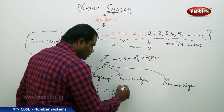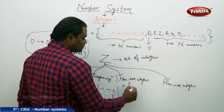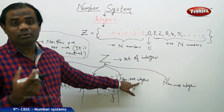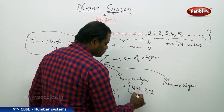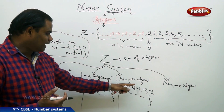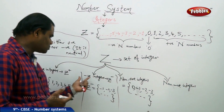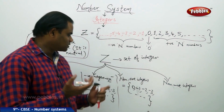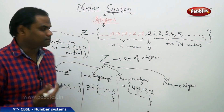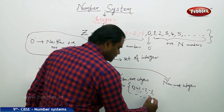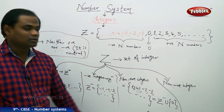Since 0 is neither positive nor negative and is neutral, when I say non-positive, I include all the integers that are not positive — meaning the negative integers — but also including 0, because 0 is a non-positive integer. So non-positive integers come out to be 0, minus 1, minus 2, minus 3, and so on and so forth till infinity. Therefore, non-positive integers is nothing but the set of negative integers including 0, written as Z minus union {0}.